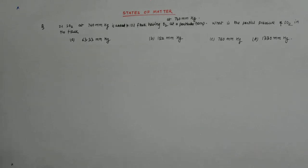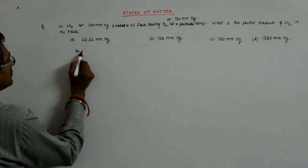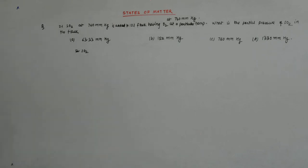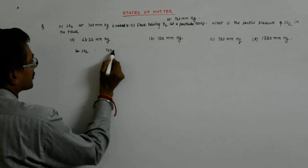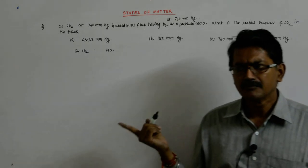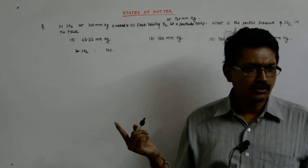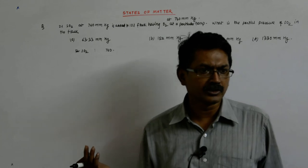Now what? So 2 liter. For SO2 our pressure is 760. I am taking all those pressures because ultimately what is happening? I will be taking the ratio, so I am not bothering to keep things in SI unit or something.